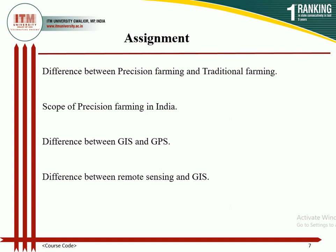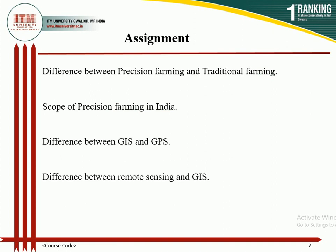There are a few assignments to complete by the end of this week: the difference between precision farming and traditional farming, the scope of precision farming in India, the difference between GIS and GPS, and the difference between remote sensing and GIS, that is the Geographical Information System.